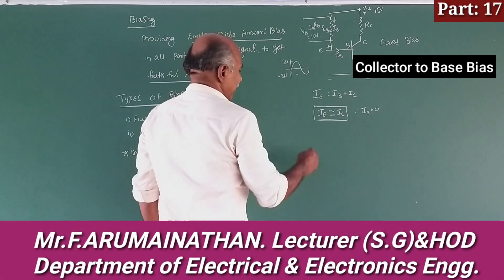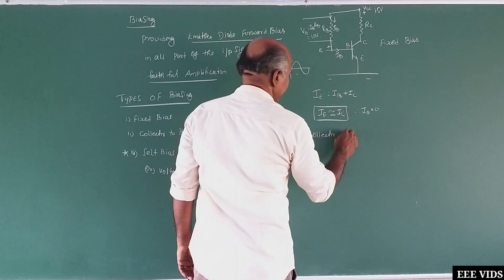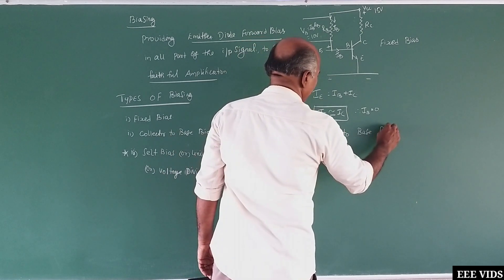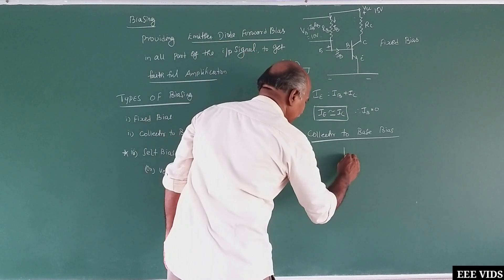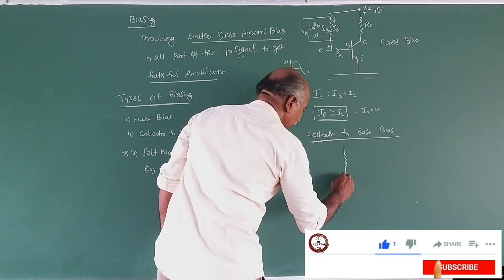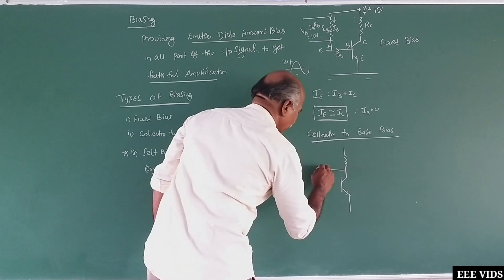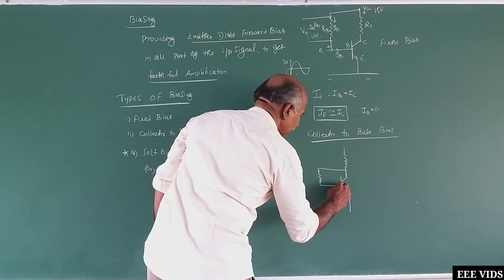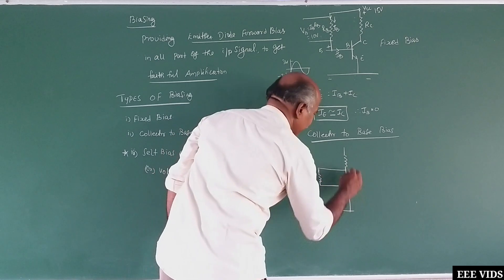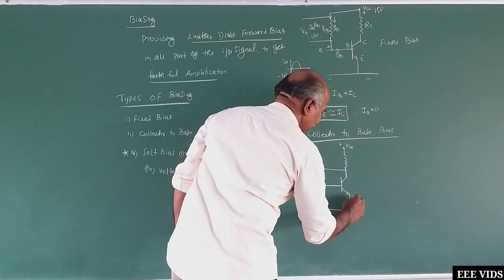Collector to base bias. This is a circuit diagram. In the resistance collector, this is the base, this is VCC. Collector to emitter. This is positive, this is negative.